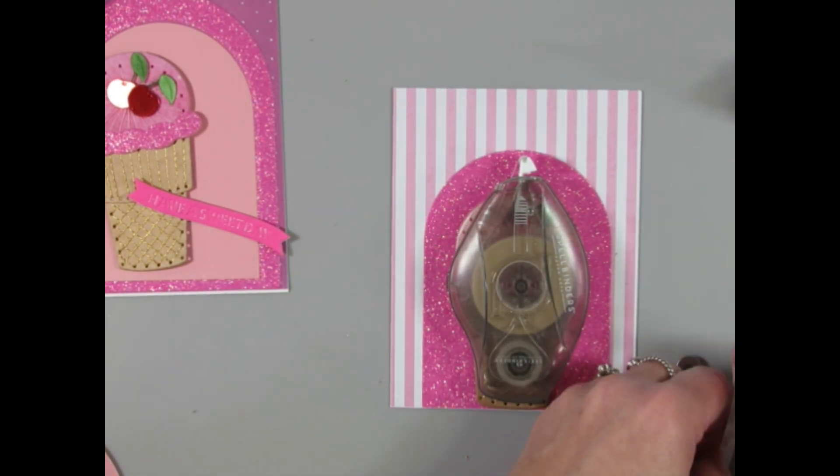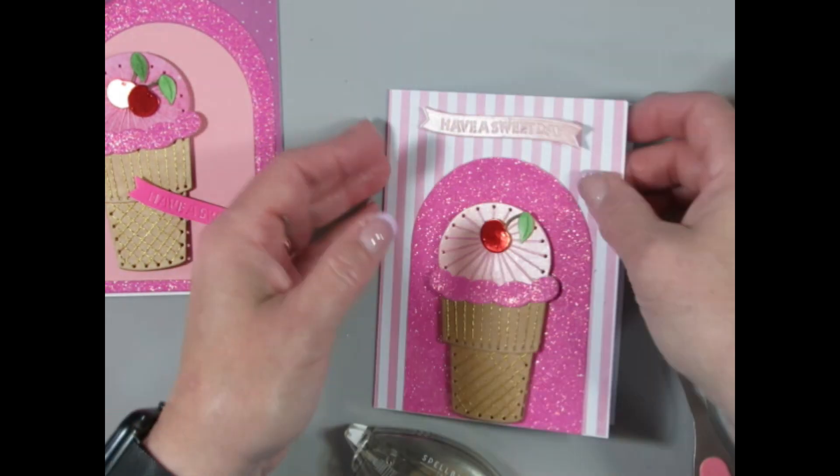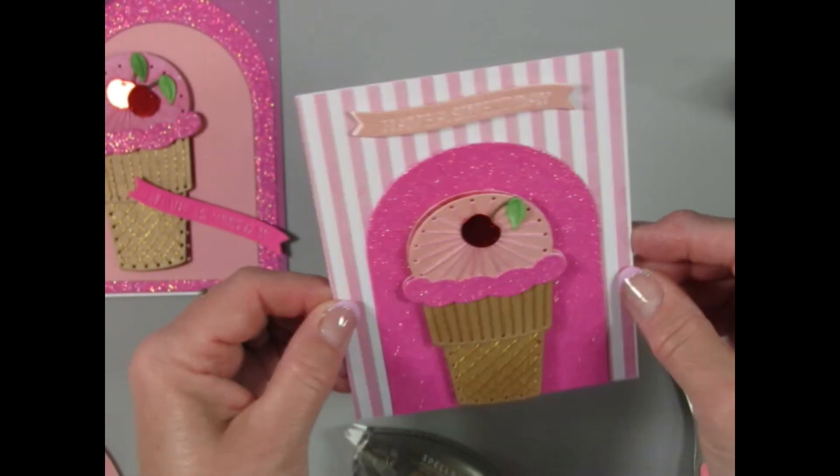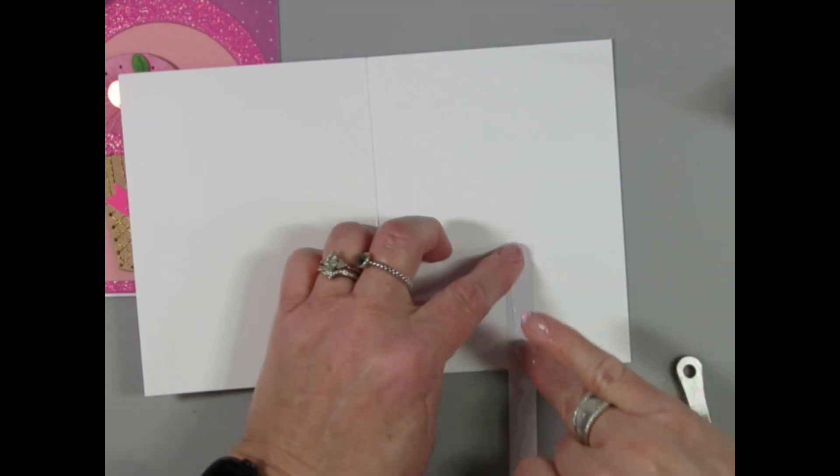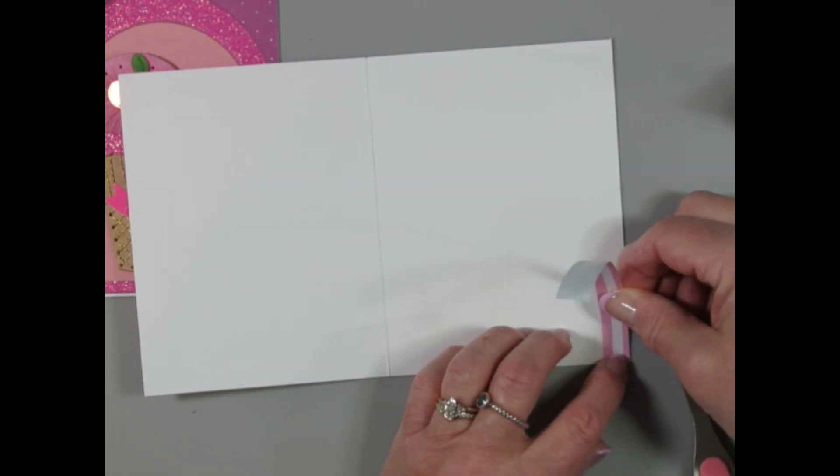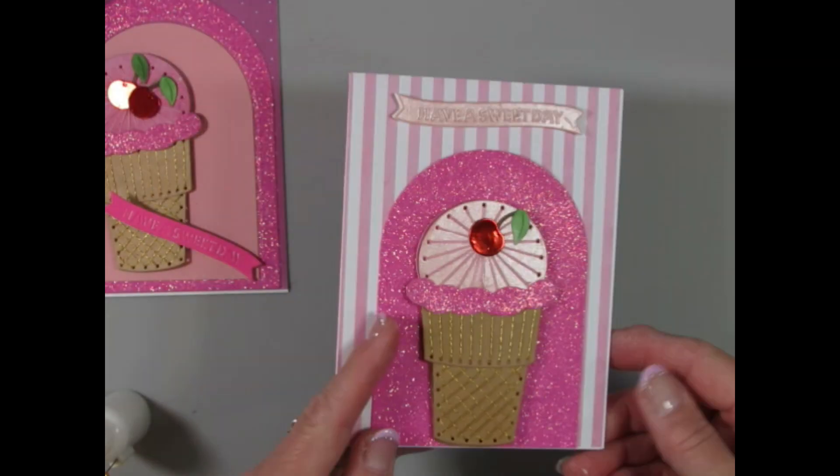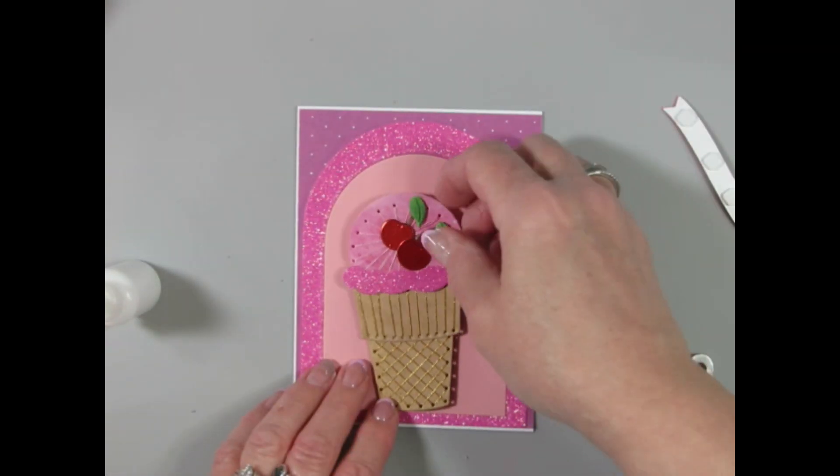And I use some of the Spellbinders mini foam dots to pop up my sentiments. I also, in addition to completing the outside, I did put a strip of the pattern paper along the inside to help with matching the two different parts of the card together. So that's card number one and card number two is very similar.